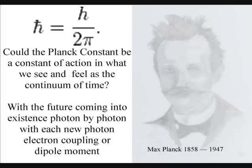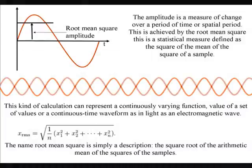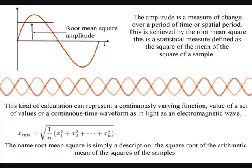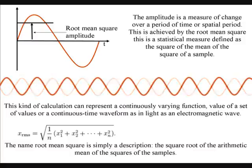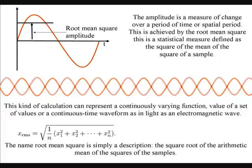To understand this we need to know why we square the amplitude to get the probability in the quantum wave-particle function or probability function of quantum mechanics. But first if we see why we square the amplitude in classical physics it will make it easier to understand. The amplitude is a measure of change over a period of time or spatial period. This is achieved by the root mean square, this is a statistical measure defined as the square of the mean of the square of a sample.